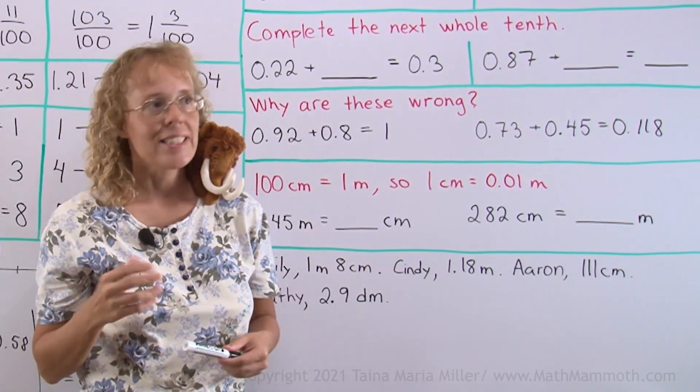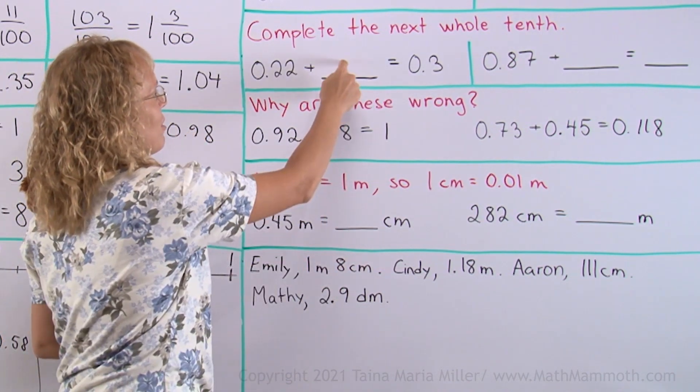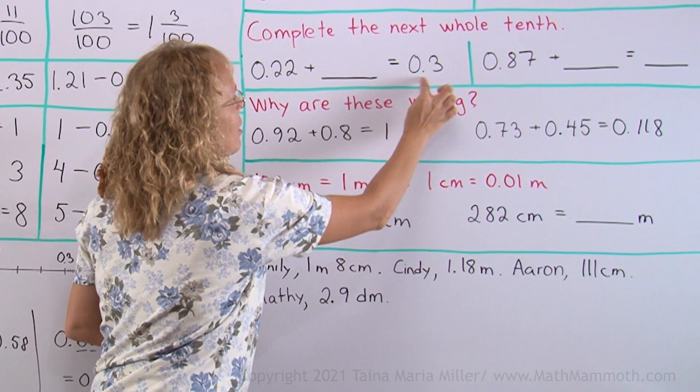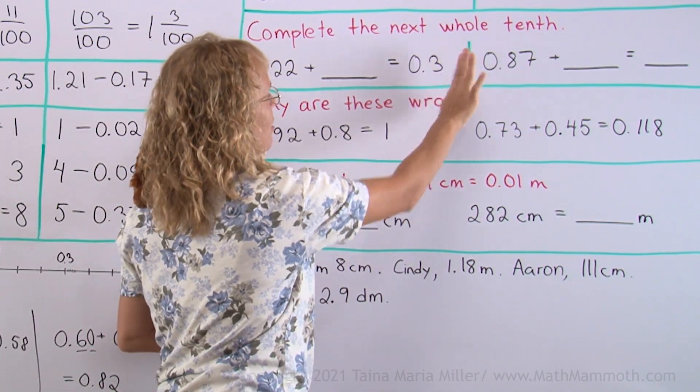Next, we will complete the next whole tenth. What does that mean? It means that we have to add something so that we will get a whole tenth. So many tenths and nothing left over, okay.